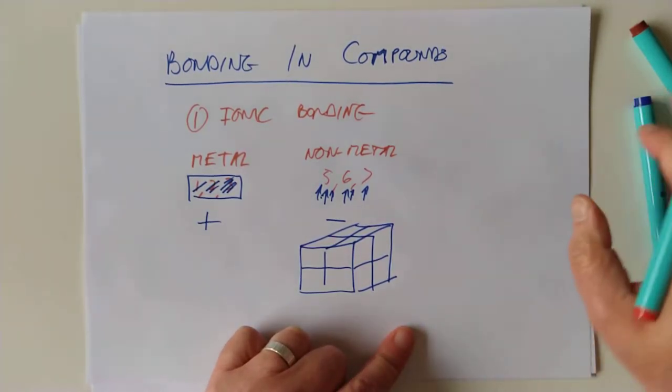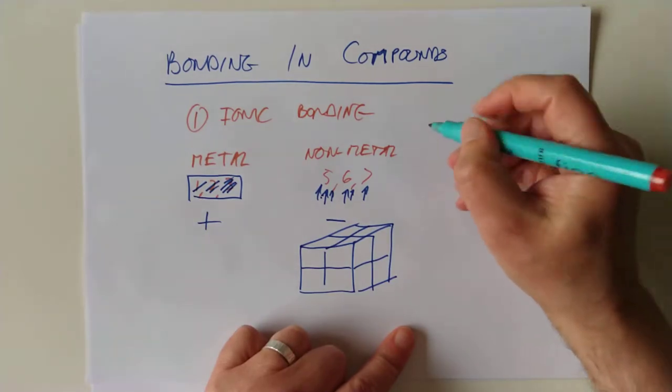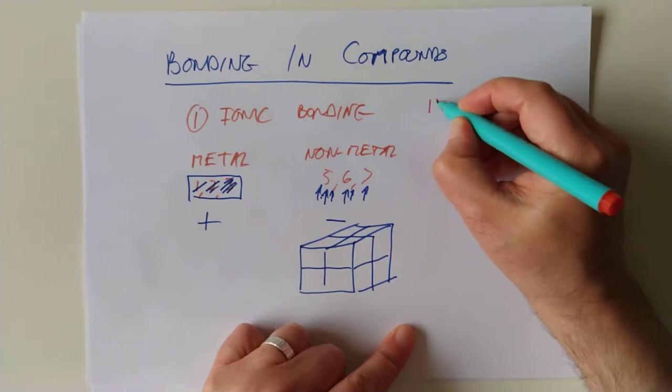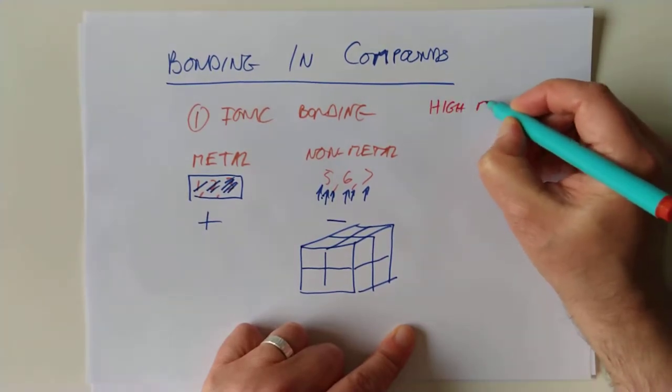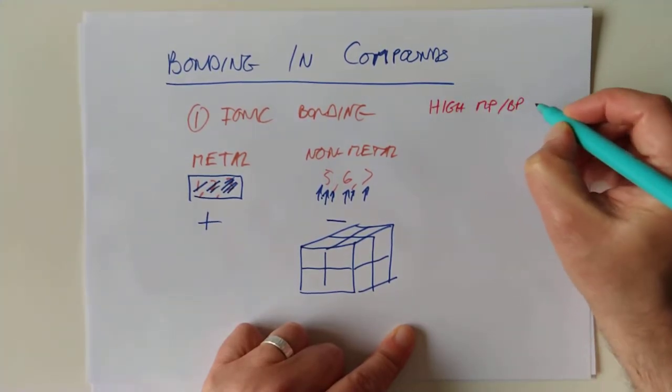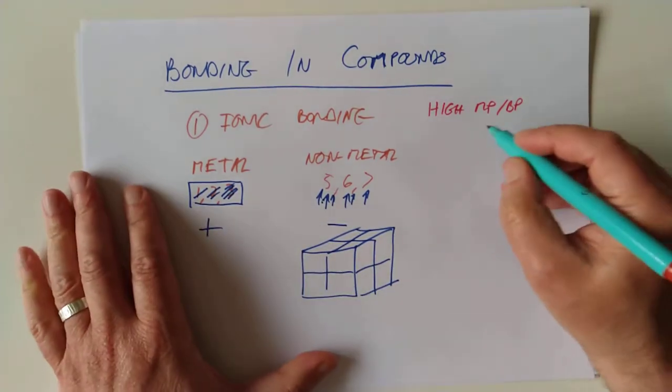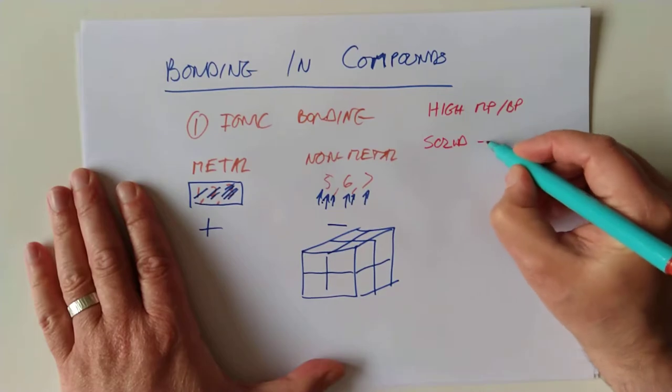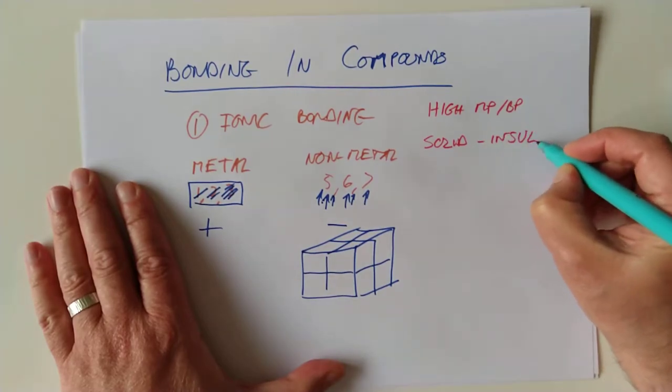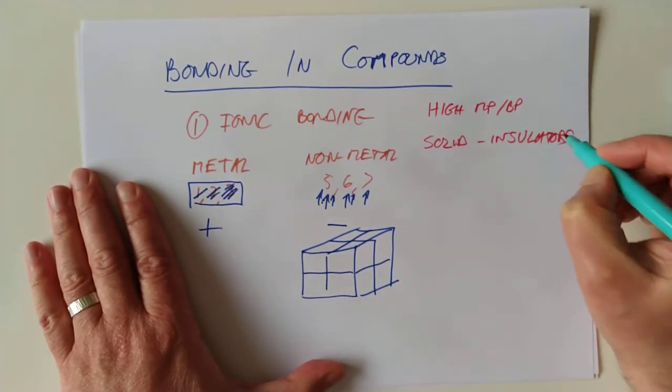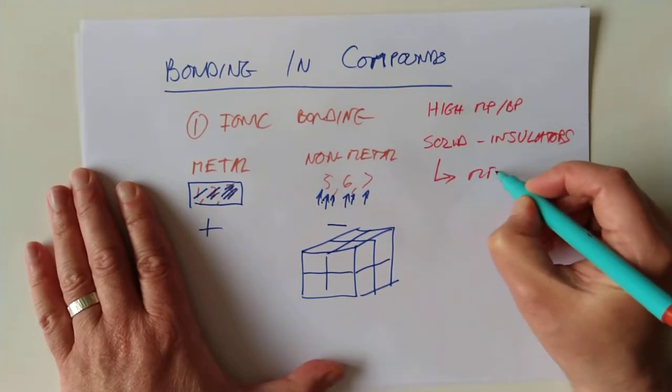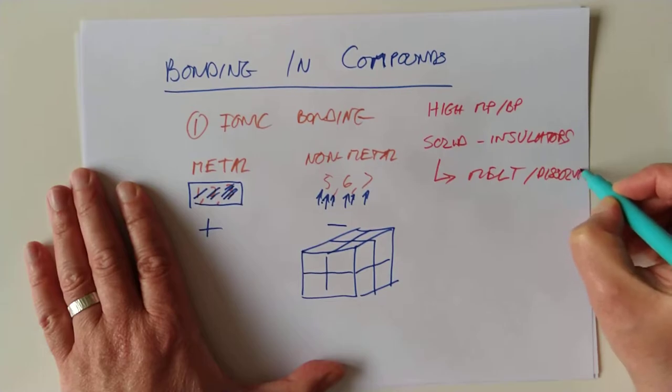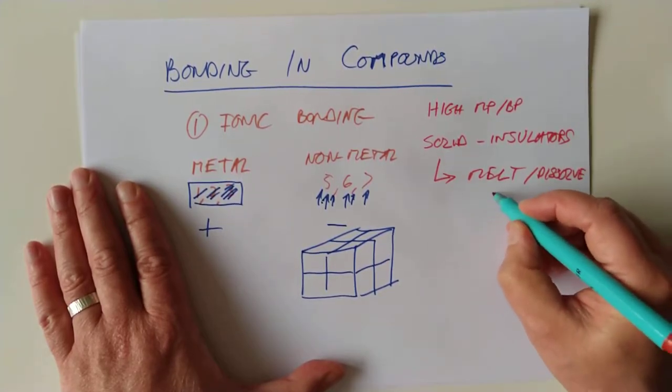So, a very quick review of this. The properties of ionic compounds, the forces that hold them together are quite strong, so therefore they tend to have high melting and boiling points. They are usually solids at room temperature. They are, when they're solid, they are electrical insulators. They don't conduct. They want to, but they can't. However, if you are to melt or dissolve, if they dissolve of course, not all ionics do dissolve in water, then they become conductors.